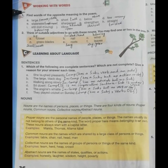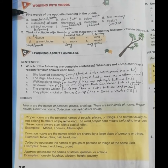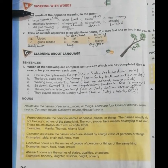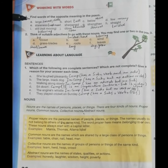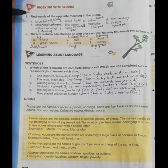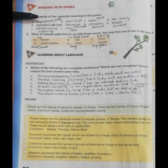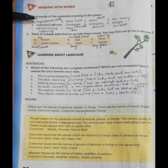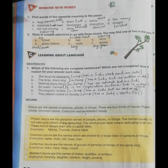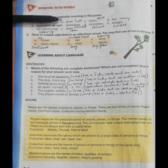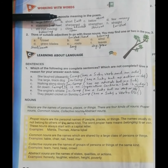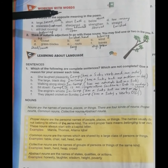Find words of the opposite meaning in the poem. The first word is 'large' and the opposite is 'small' or 'little.' Then 'short' and the opposite is 'tall.' Then 'below' and the opposite is 'above.' Then 'few' and the opposite is 'many.'